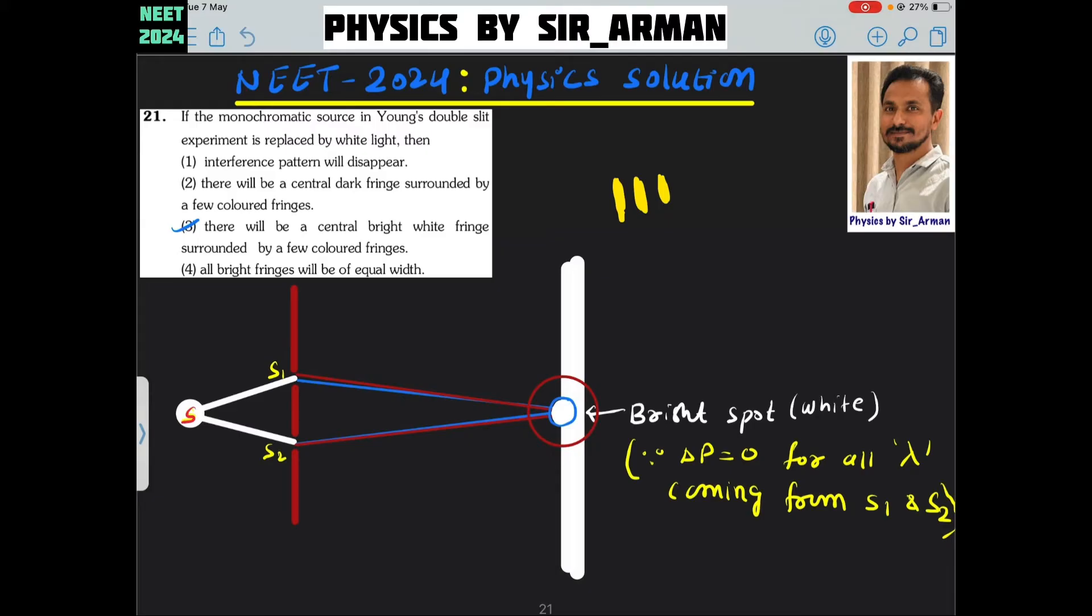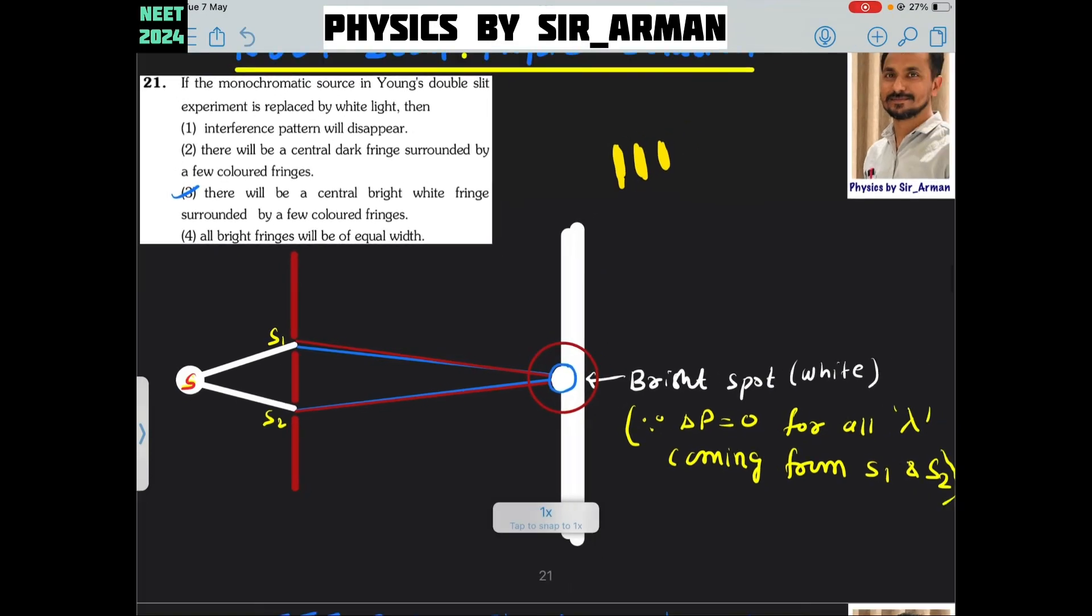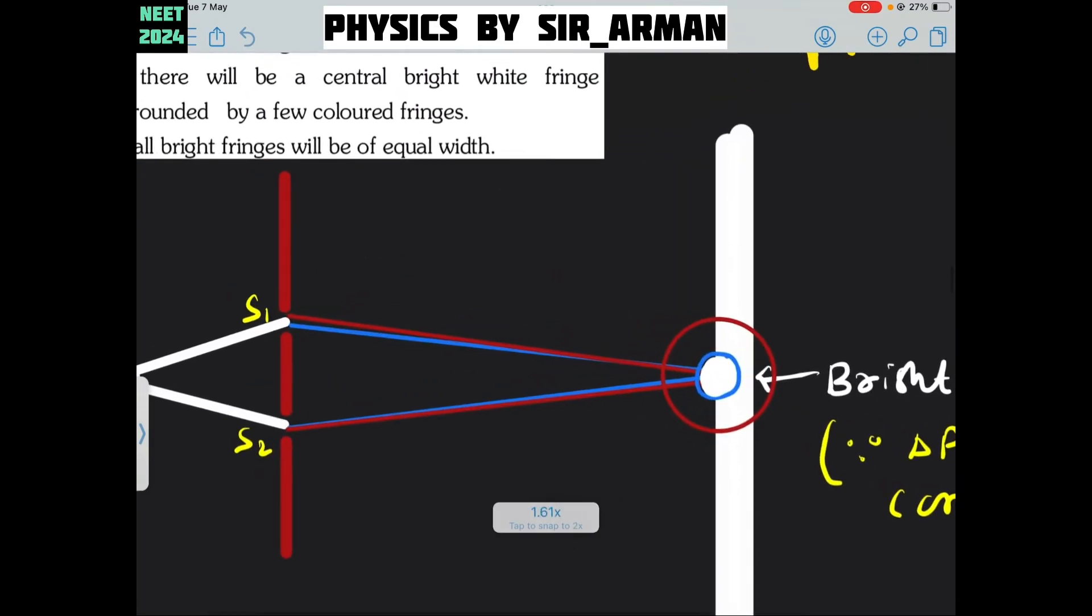But what if you have white light? When the light is coming out from this slit, all this light suffers different diffraction or they bend at different angles. They diverge at different angles. But all the light which is reaching at the central point will have the same path difference. All the light which is coming here will have the same path difference because they travel the same distance. So, their path difference will be zero.